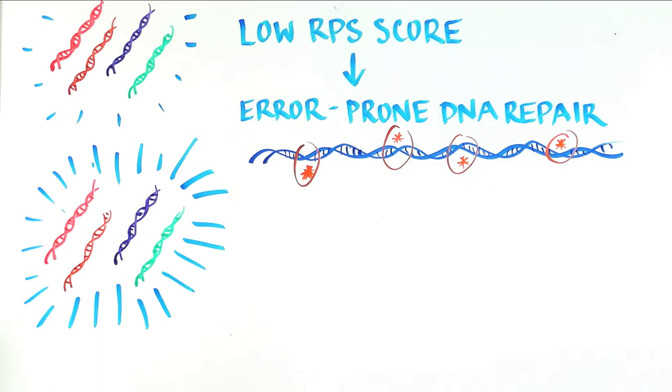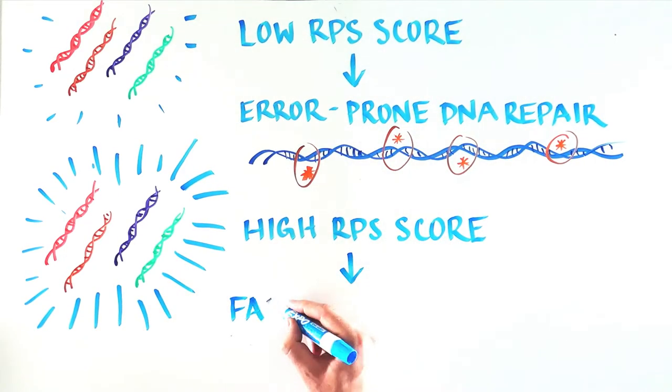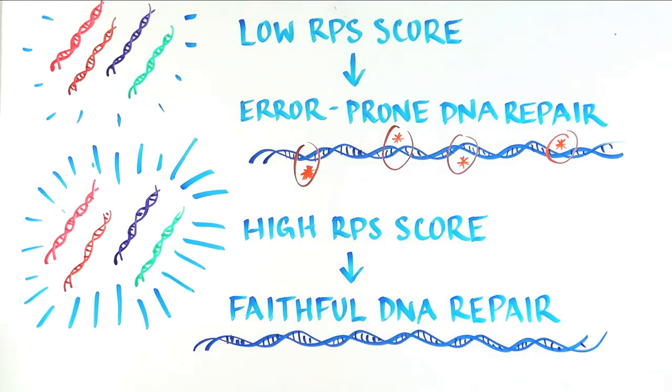Whereas a high RPS score meant that the cells were using a faithful DNA repair mechanism that doesn't introduce errors and were accumulating fewer mutations.